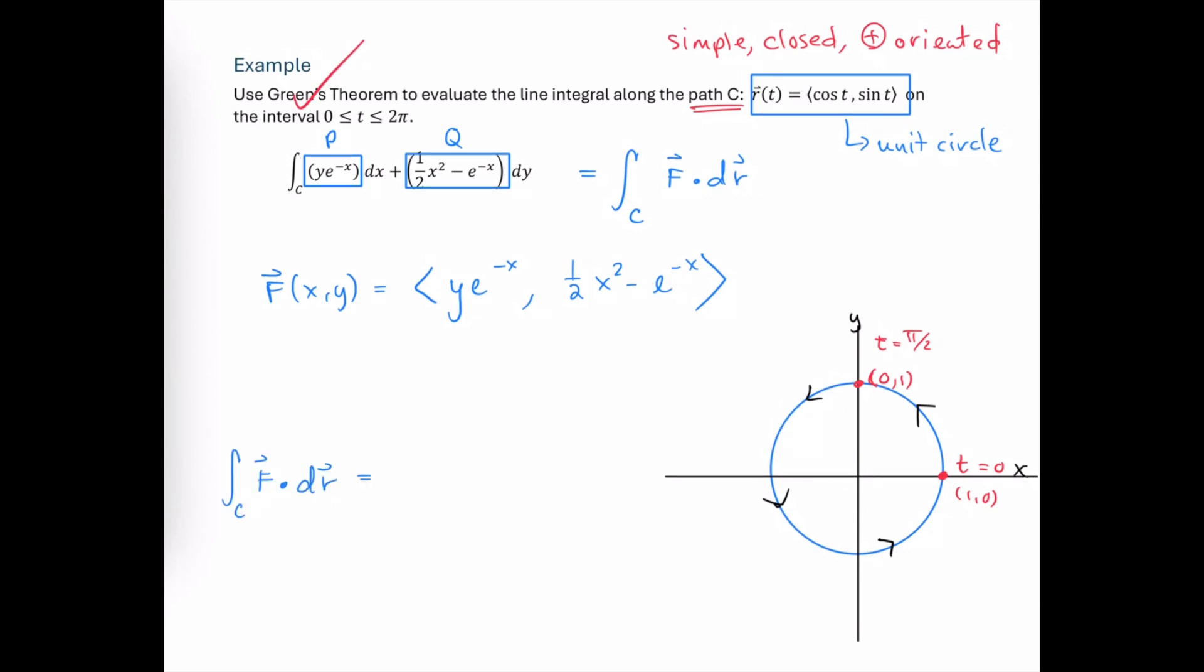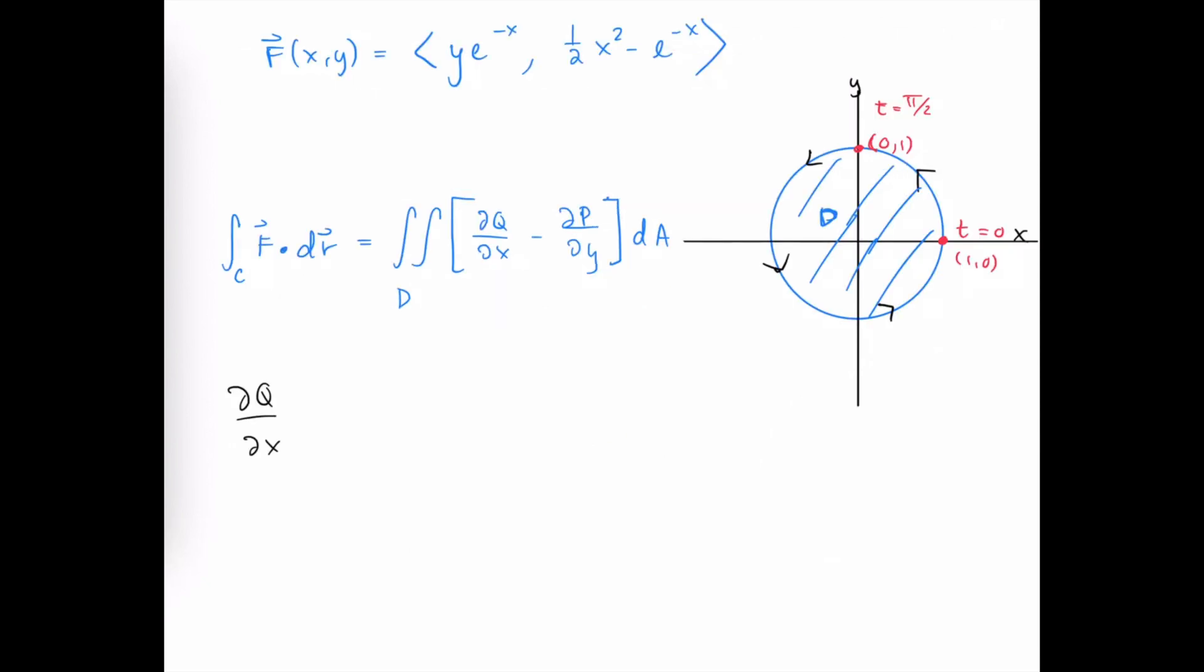So we can proceed with Green's Theorem, which again says the line integral can be evaluated by looking at a double integral over the interior of C, which, as a reminder, is the region enclosed by C, of the integrand partial of Q with respect to x minus partial of P with respect to y. And then we continue to say dA here until we decide on our limits of integration. So first thing that we need to do is to determine these first partial derivatives of P and of Q. Remember, this is P and this is Q. So the first partial of Q with respect to x is going to be x to the first power plus e to the negative x. And the first partial of P with respect to y is going to be just e to the negative x.